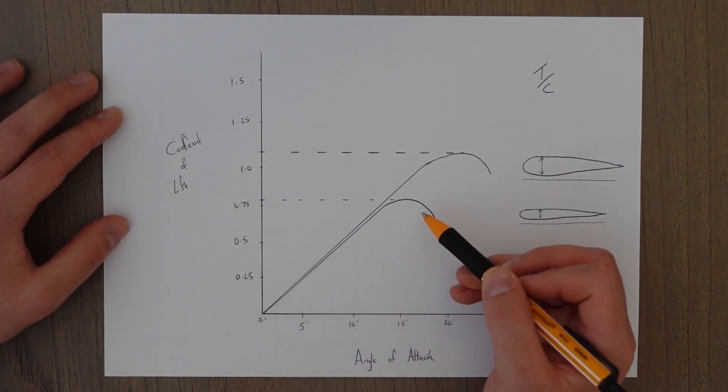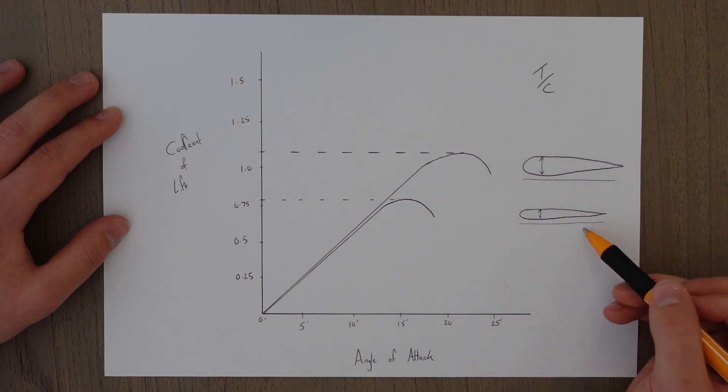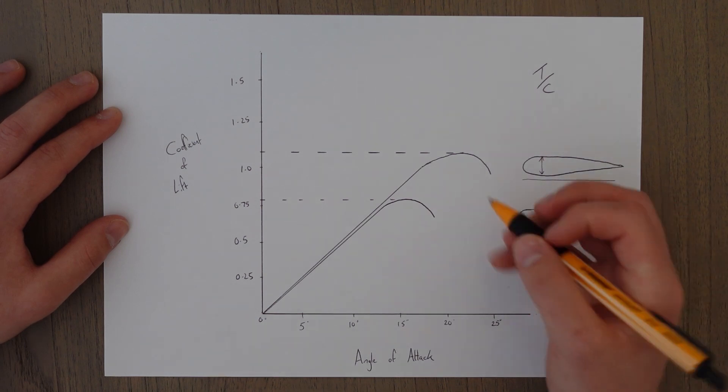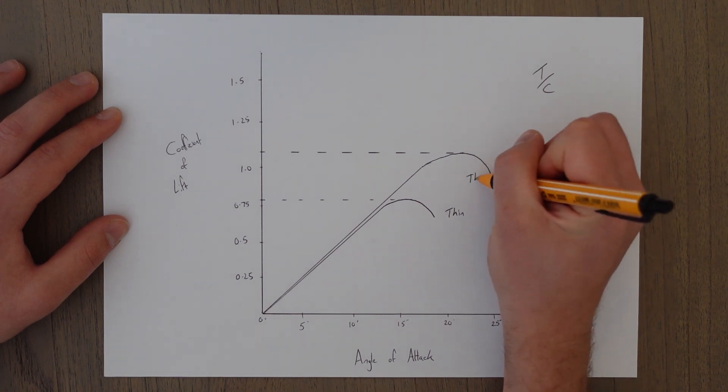The lower line here is this wing design here, it's a thinner wing. So we'll label this thin, we'll label this one thick.